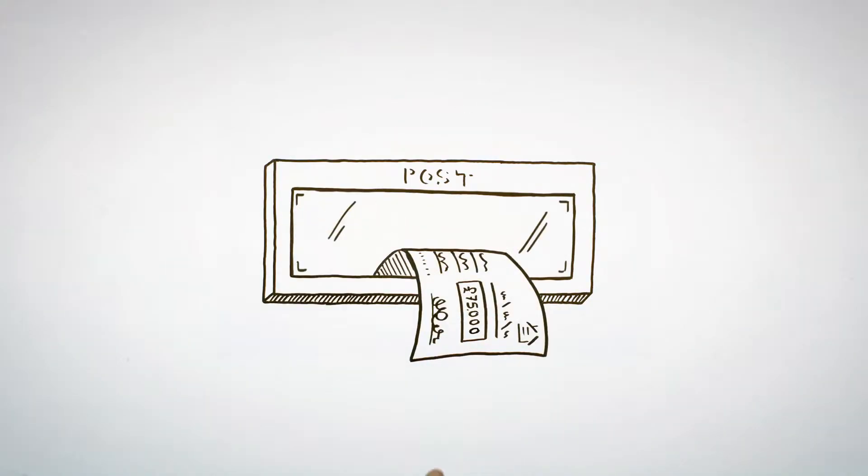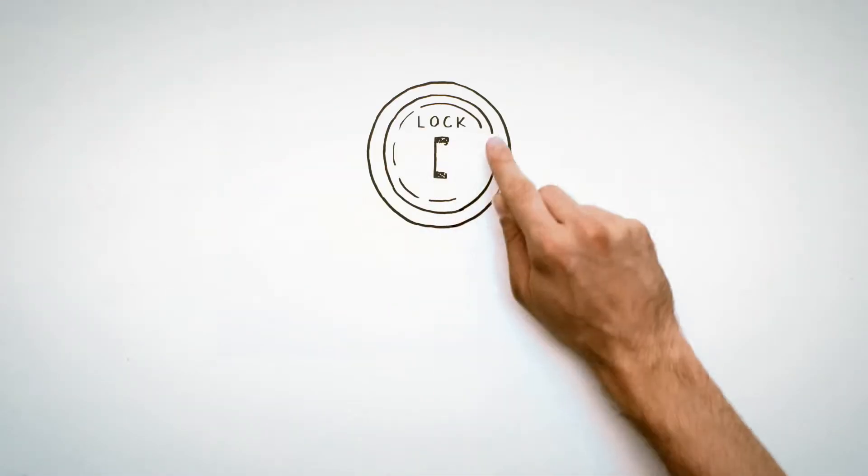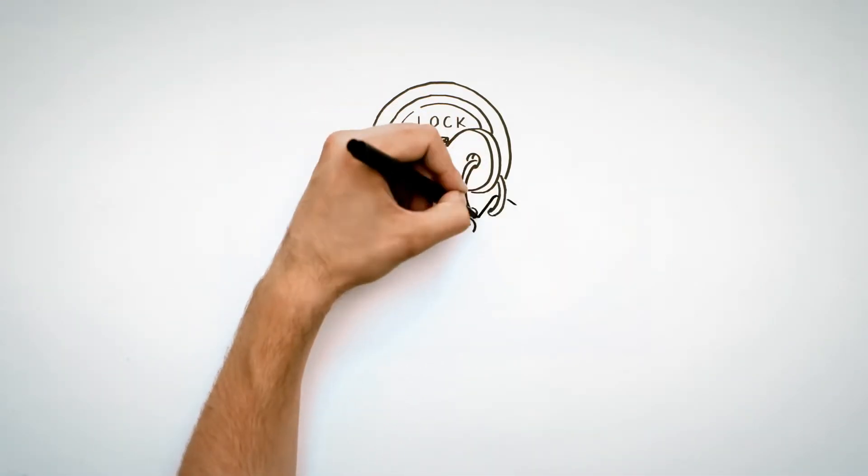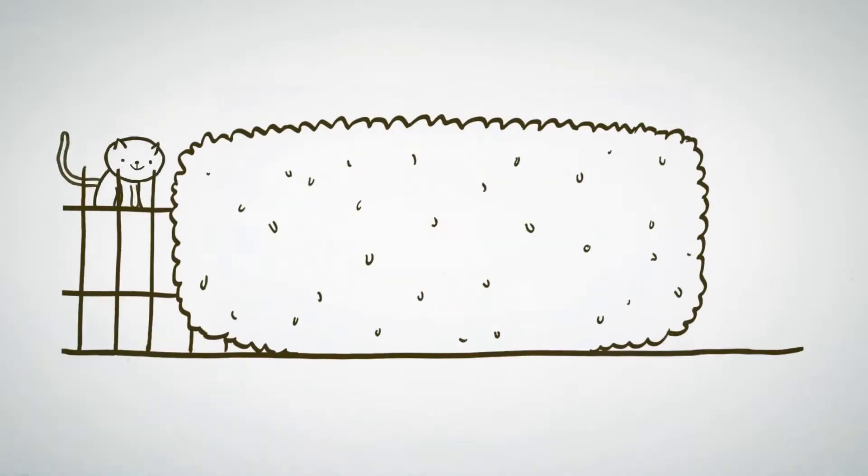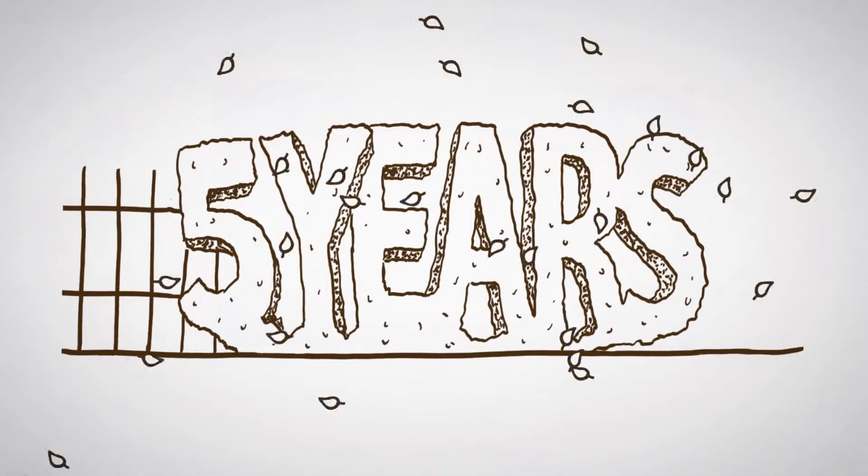Do you picture yourself as a homeowner? The right to buy scheme has changed. And now you could get up to £75,000 discount to help buy your home.